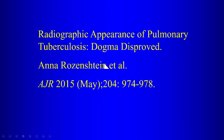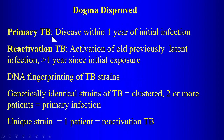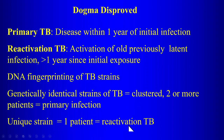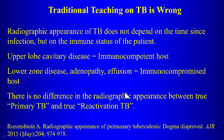Primary TB is defined as disease within one year of initial infection; reactivation TB is activation of previously latent infection greater than one year since exposure. DNA fingerprinting of TB can help differentiate: genetically identical strains clustered in two or more patients suggest primary infection; a unique strain most likely represents reactivation TB.